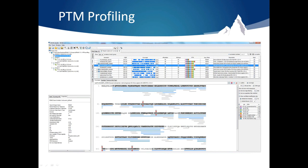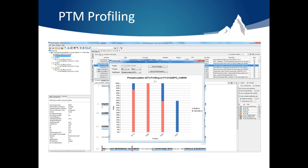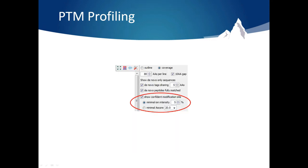Running PTM profiling is easy. At the top right-hand corner of the coverage view, select the PTM profiling button. This will compile the data and present the PTM profiling results for all the identified modifications in that protein. Only confident PTMs are used, so be sure to select either A-score or minimal ion intensity and the desired cutoff using the legend to the right of the coverage view.